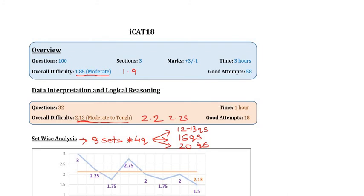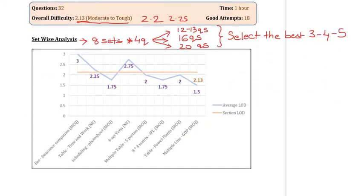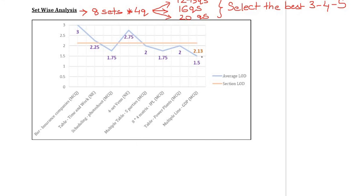In this particular mock it was slightly easier compared to the actual CAT, so I would have targeted 5 sets. But the key in DILR is to select the best 4 or 5 sets. However, there are certain sets which need to be attempted by everybody so as to give yourself the best chance of clearing the cutoff. At a very basic level we look at the average difficulty of each set with respect to that section. This very simple graph which maps the average LOD of each set clearly tells me which my 2 toughest sets were.